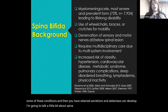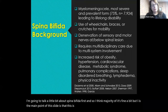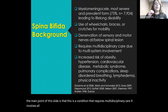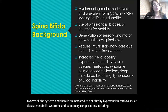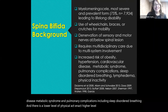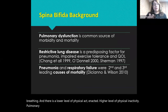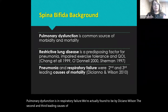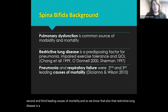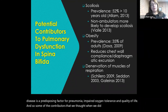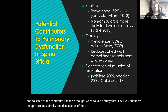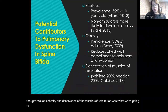Talking about spina bifida first: this condition requires multidisciplinary care involving all body systems, with increased risk of obesity, hypertension, cardiovascular disease, metabolic syndrome, and pulmonary complications including sleep-disordered breathing. There is a higher level of physical inactivity. Pulmonary dysfunction and respiratory failure were found by DC and Wilson to be the second and third leading causes of mortality. Restrictive lung disease is a predisposing factor for pneumonia, poor exercise tolerance, and reduced quality of life. Contributors we hypothesized included scoliosis, obesity, and denervation of respiratory muscles.